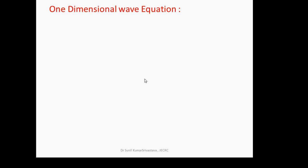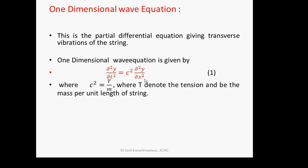First of all, let us know the mathematical equation. This is the partial differential equation giving transverse vibration of a string. The one-dimensional wave equation is given by ∂²y/∂t² = c² ∂²y/∂x², where c² = T/m, T denotes the tension and m denotes the mass per unit length of the string.